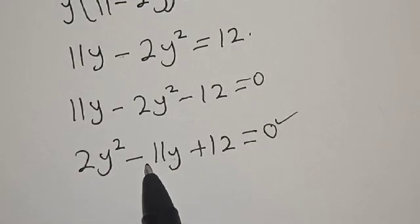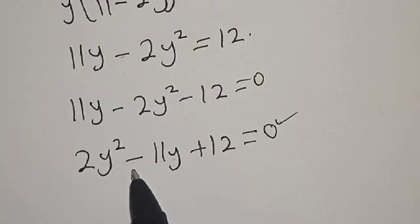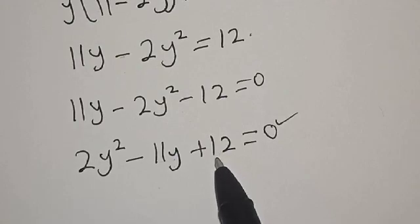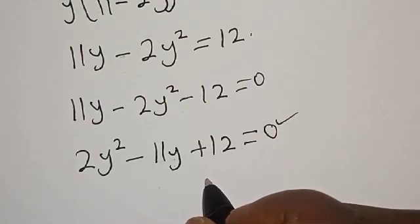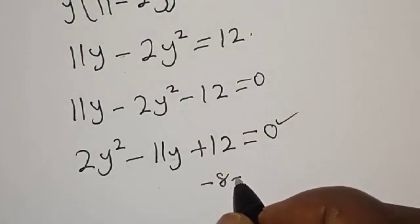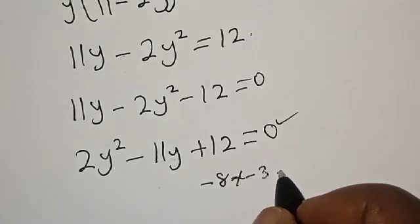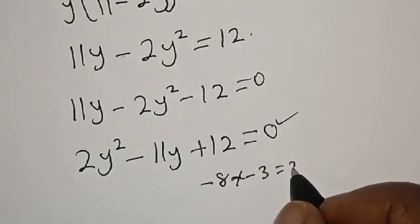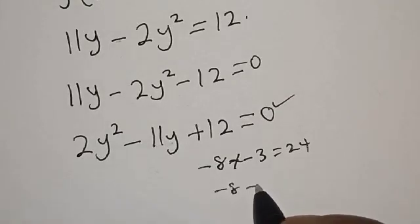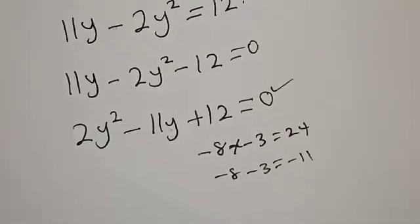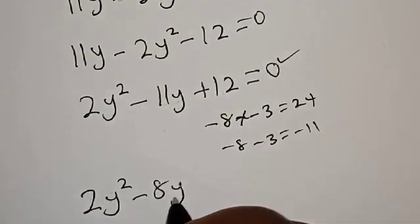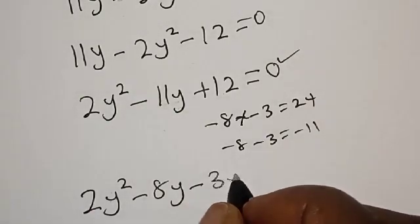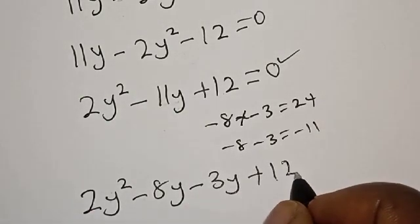We can solve this using the quadratic general formula or the factorization method. In this case, we are going to make use of the factorization method. This is 2 times 12, that is 24. And 8 times 3 is 24. Then minus 8 times 3 gives plus 24, and minus 8 minus 3 gives minus 11.